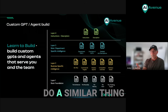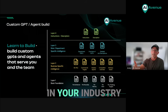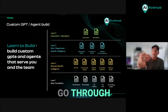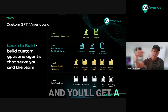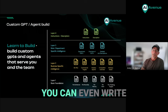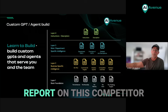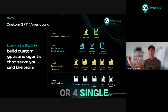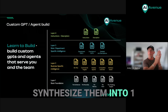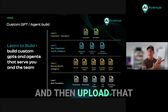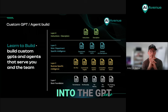We then do a similar thing from a competitive perspective. You might have three or four competitors in your industry — go through, get their URLs, and do a process where you get a deep research report on those competitors. You can get a great one from Perplexity; you can even write the prompt in ChatGPT for Perplexity to go and get the deep research report on each competitor. End up with three or four single competitor reports, synthesize them into one, and upload that — so you've baked in your full competitor analysis into the custom GPT.